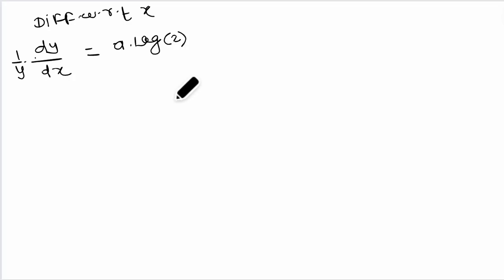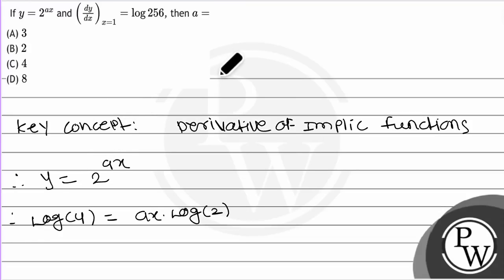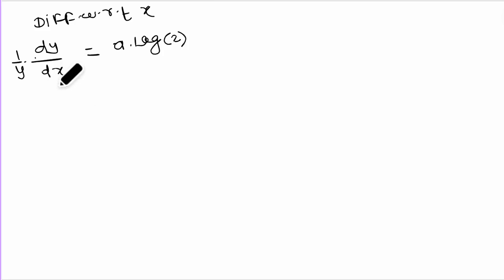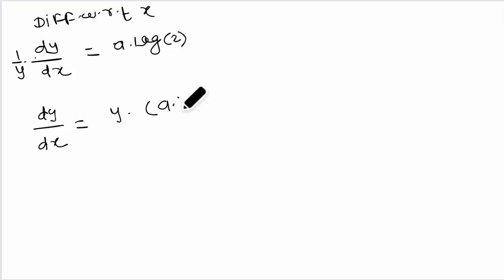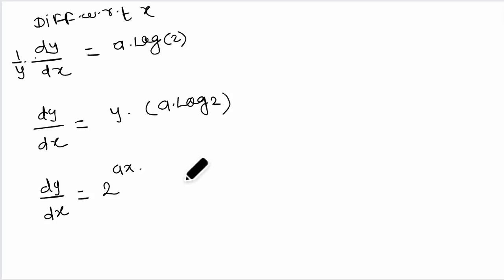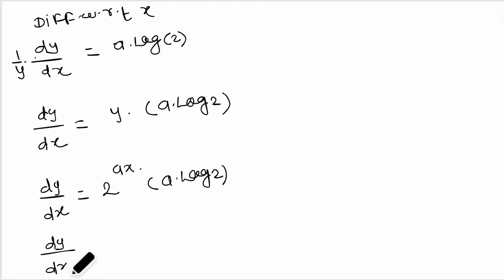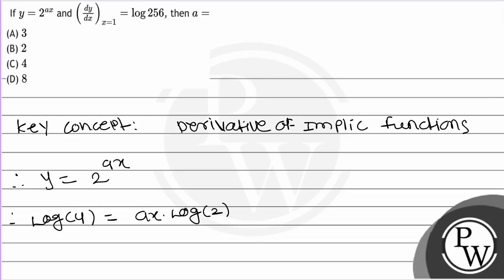We know 1/y into dy/dx equals a into log 2. They have given dy/dx at x equal to 1, so substitute x equal to 1. dy/dx at x equal to 1 will be y into a into log 2, and substituting y gives dy/dx equal to 2 to the power a into a into log 2. They have given that dy/dx at x equal to 1 is log of 256.